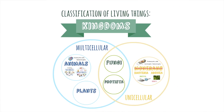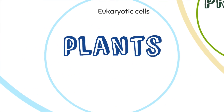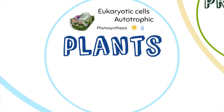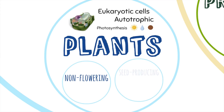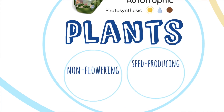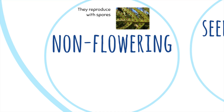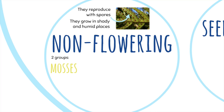The plant kingdom is formed by organisms with eukaryotic cells, and they are autotrophic because they perform photosynthesis to make their own food. There are two types: non-flowering plants and seed-producing plants. Non-flowering plants reproduce with spores and they grow in sunny and humid places. There are two groups: mosses and ferns.